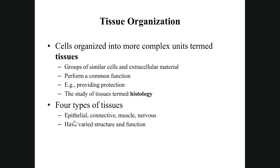Epithelial tissue creates two subgroups. The first is called epithelium, which covers the body surface and lines the inside of the body. The second component is glandular tissue — your endocrine or exocrine structures are made out of epithelium. We'll talk about these glands today.